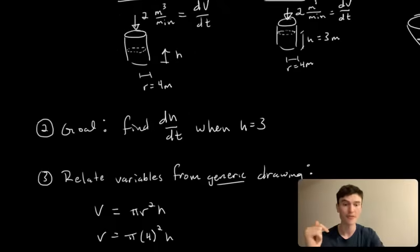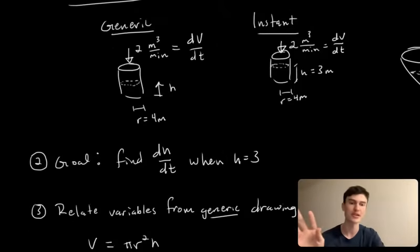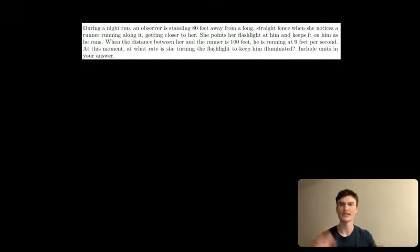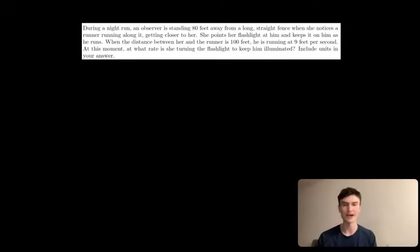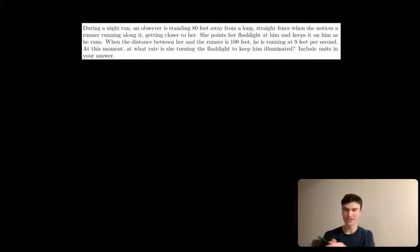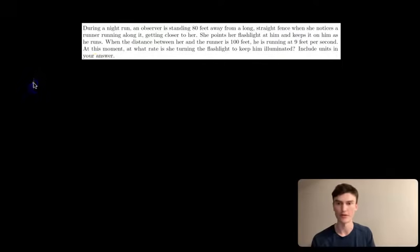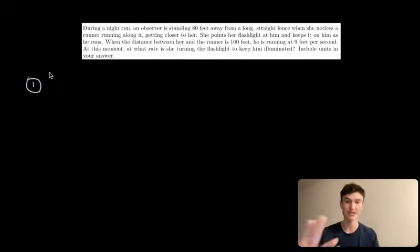Now let's take the same framework into a much more challenging related rates problem. This one involves a person running along a fence and someone standing nearby shining a flashlight at the runner. We want to find the rate at which the observer is turning the flashlight. You get triangles and a lot more to work out. So first step: draw our two pictures.